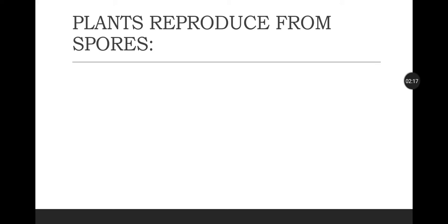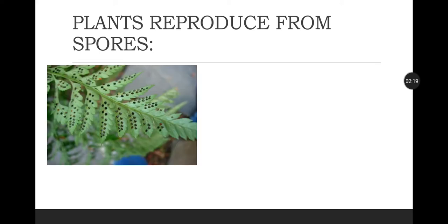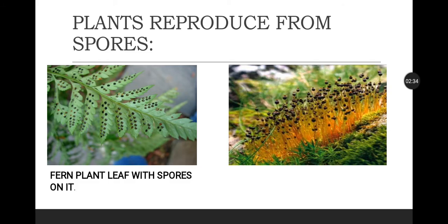Plants that reproduce from spores - look at this picture. This is a fern plant leaf with spores on the back side of the leaf. You can see the black colored spores on it. Another example is a moss plant with its spores. Both of these plants bear spores. When these spores fall on the ground, they will germinate into a new young plant.